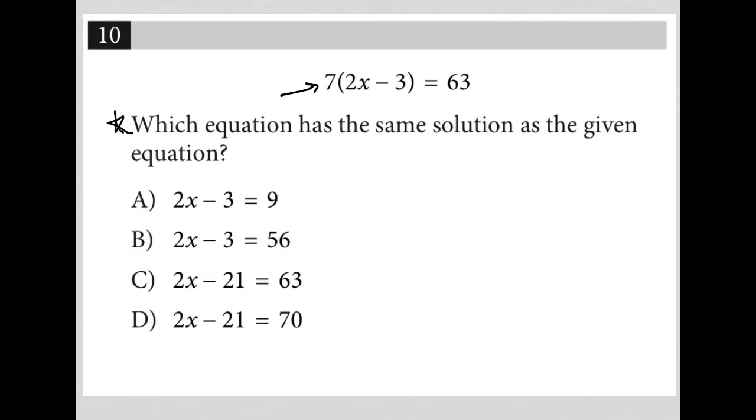Which equation has the same solution as the given equation? I see that choices A and B have 2x minus 3 involved, while choices C and D have 2x minus 21 involved.